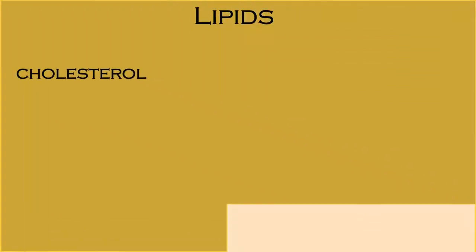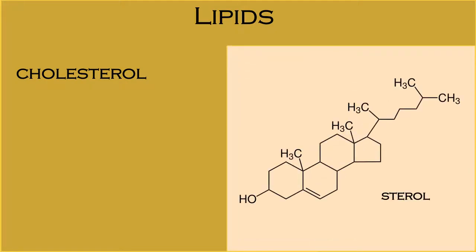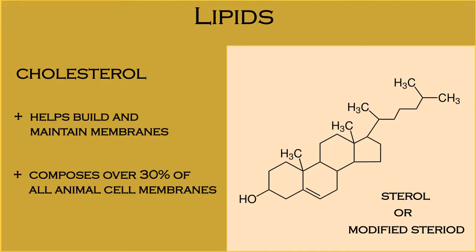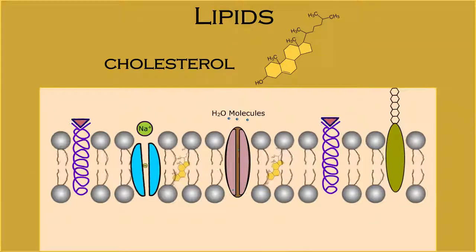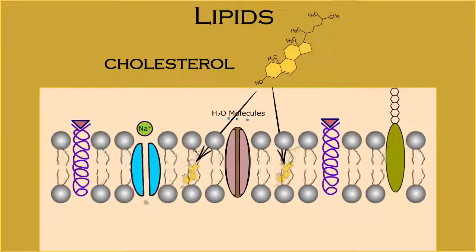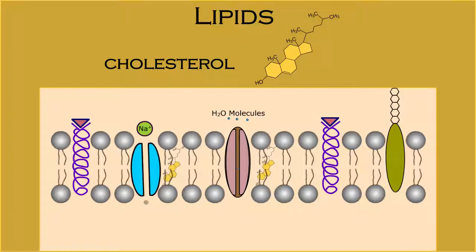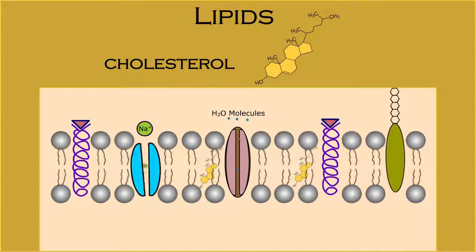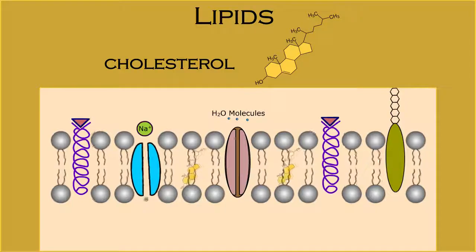Cholesterol is an organic molecule known as a sterol, or modified steroid. It helps build and maintain membranes and composes over 30% of all animal cell membranes. The cholesterol molecule has four interconnected carbon rings. Cholesterol helps to stabilize all animal cell membranes. The body uses it to synthesize steroid hormones, including sex hormones and those of the adrenal cortex. It's also used during vitamin D biosynthesis.